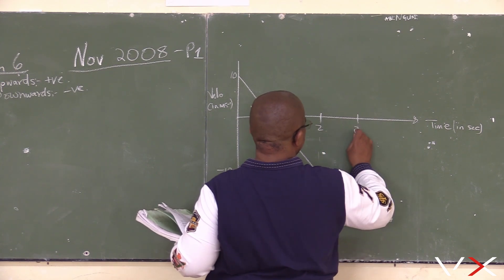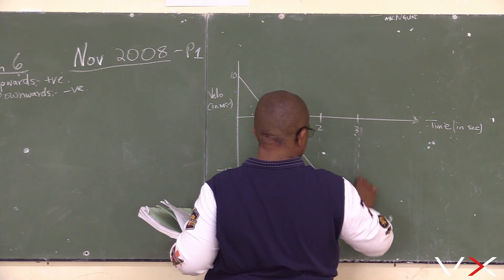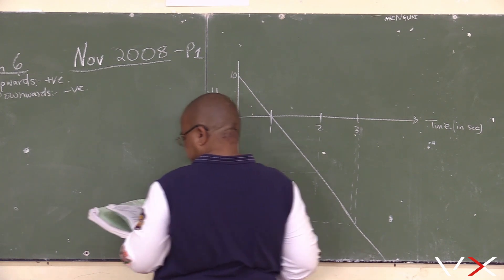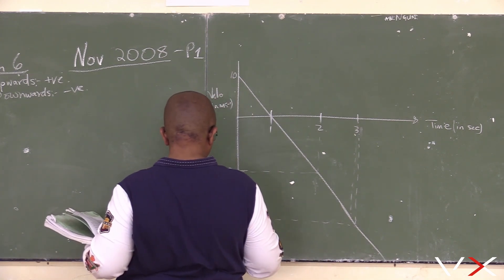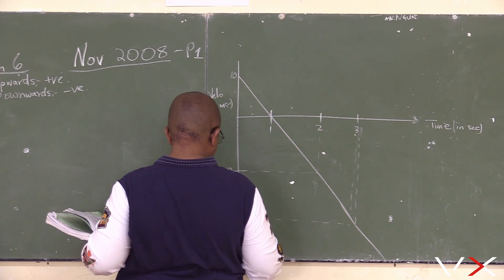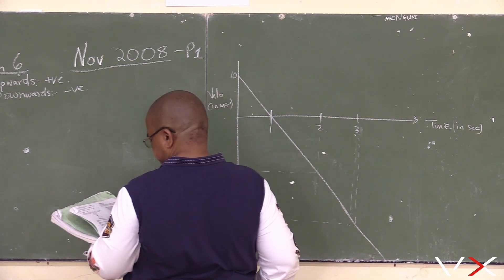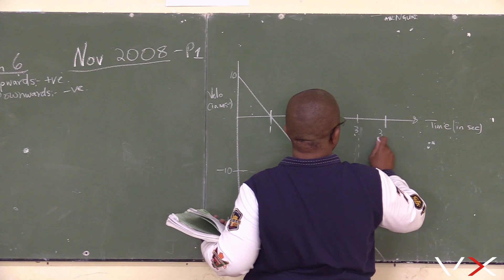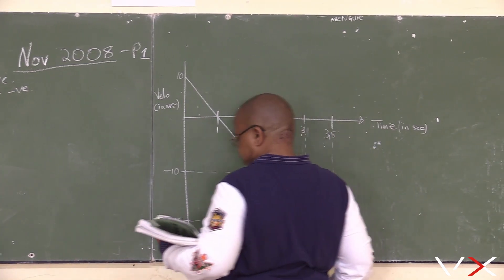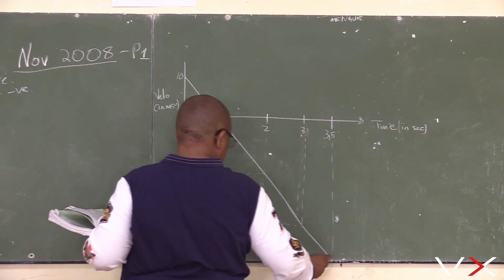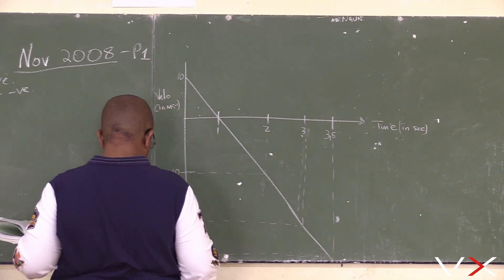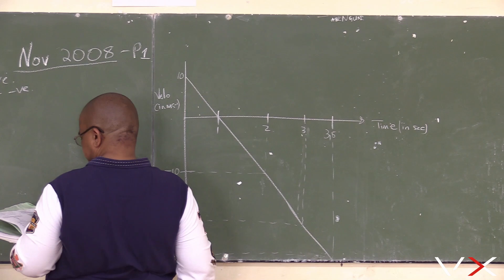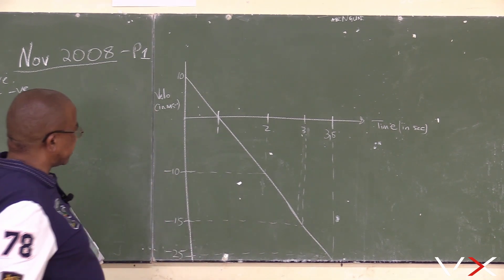From the graph we can read key values: at 3 seconds the velocity is minus 15, and at 0.5 seconds the velocity is minus 25, and the total time is 3.5 seconds. Now we have something of this nature.